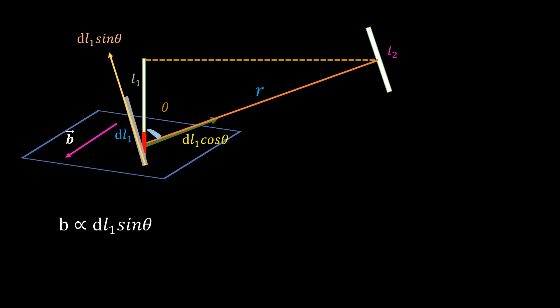Experimentally, Christian also discovered that the strength of the field felt by wire 2 is inversely proportional to the square of the separation between the wires. So we have this relation.